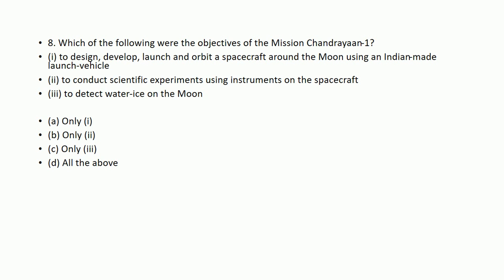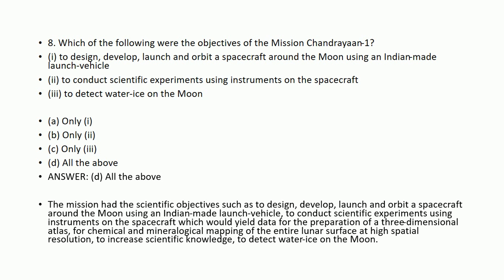Which of the following were the objectives of the mission Chandrayaan-1? First, to design, develop, launch, and orbit a spacecraft around the moon using an Indian-made launch vehicle. Second, to conduct scientific experiments using instruments on the spacecraft. Third, to detect water ice on the moon. All three objectives are correct. The mission also aimed to prepare a three-dimensional atlas for chemical and mineralogical mapping of the entire lunar surface at high spatial resolution.